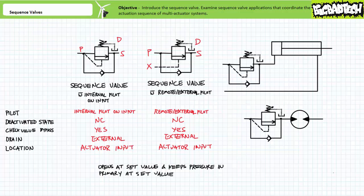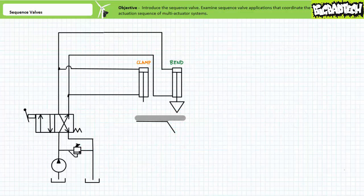We'll discuss kickdown sequence valves in a moment that exhibit slightly different behavior. Note that sequence valves can either be direct or pilot operated, with the understanding that a direct acting sequence valve might be faster acting than a pilot operated sequence valve. However, it may illustrate early creep of the sequenced actuator given direct acting valves tend to exhibit cracking behavior. The classic application example of sequence valves is a clamp and bend circuit operated by a single directional control valve. The desired function is to first clamp and then bend the object, not clamp and bend all at once, or worse yet, bend it then clamp it. A sequence valve can be used to automatically coordinate this desired actuation sequence.